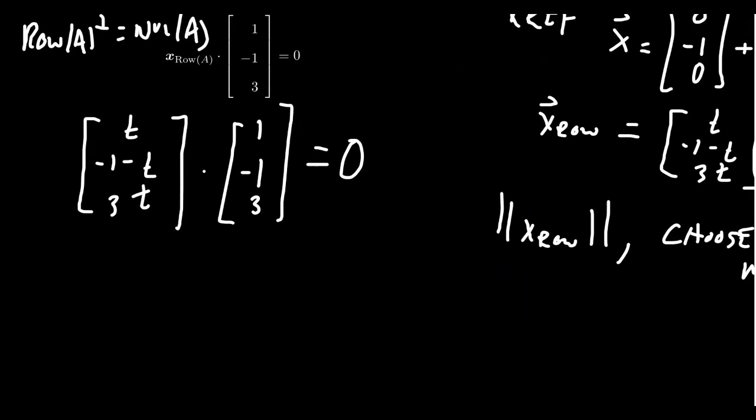And if we do the dot product, we're going to get one times T, which is T. You get negative one times negative one minus T, so that's going to be one plus T. And then we're going to get nine T.